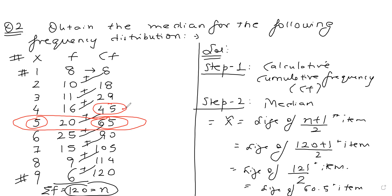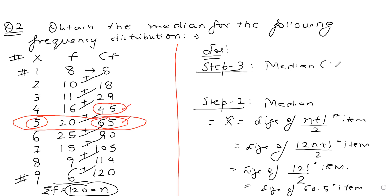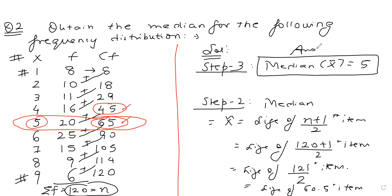The 60.5th item lies between cumulative frequencies 45 and 65. We always take the latter one, and it's closer to 65. So the median X̃ equals 5. That is the answer. In the case of a discrete frequency distribution, find cumulative frequencies, apply the formula, check where the value appears in the CF column, always choose the latter one, and the corresponding value of X is the median.